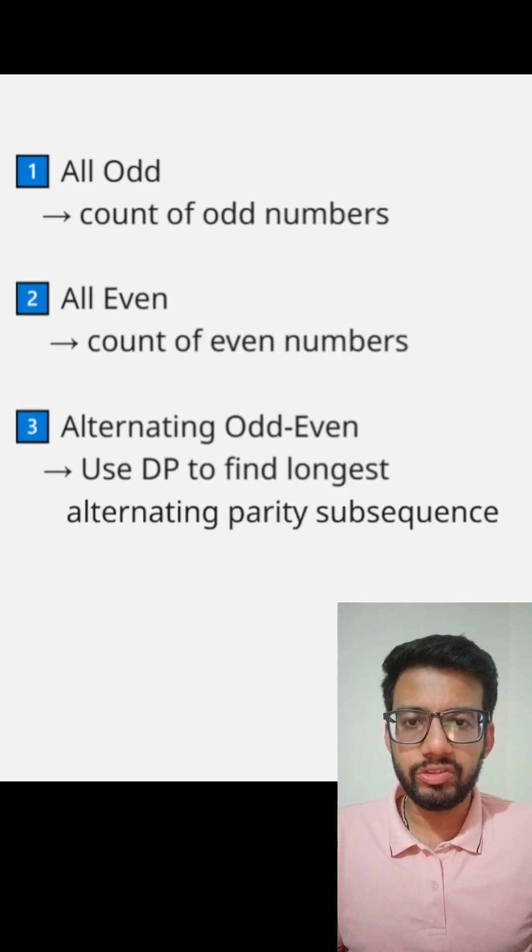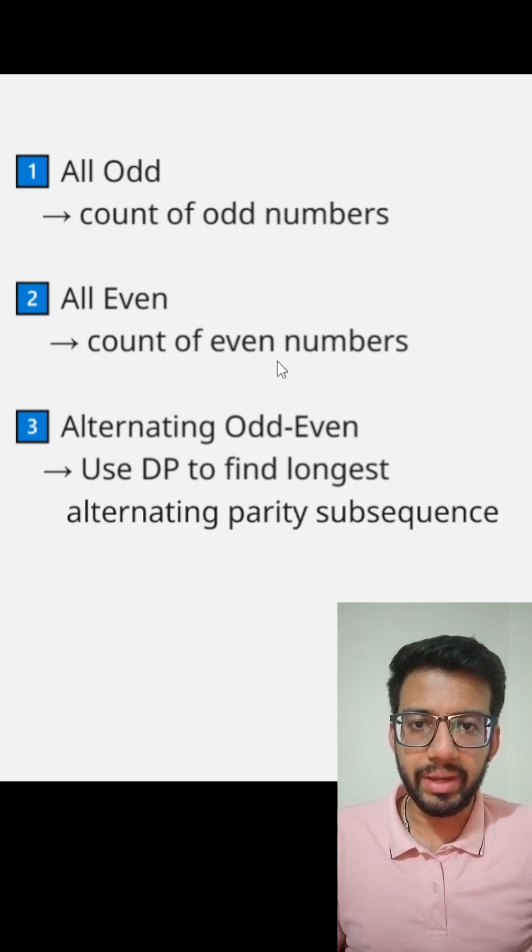We can easily find the length of the subsequence with all the odd elements or with all the even elements by using the frequency. But how do we find out the maximum length of a subsequence with alternating parity?